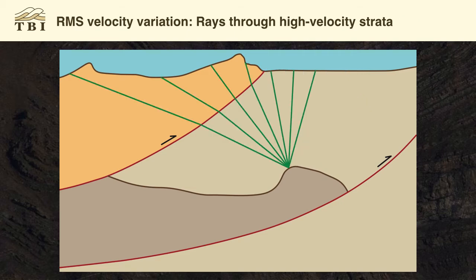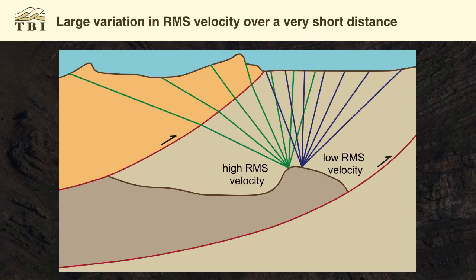If we go just a little bit to the left over the crest of the structure and the back limb, the rays that illuminate that part of the structure come from the surface locations in the overthrust. So we'll see a high RMS velocity on this side of the structure and a low RMS velocity on this side. In this example, we've got homogeneous tan rocks above the target, and yet we would pick a high RMS velocity here and a low RMS velocity here to optimize the imaging. So the velocity field shows lateral variation that is really not there in the subsurface geology — it's just the imaging parameter used to optimize the imaging.